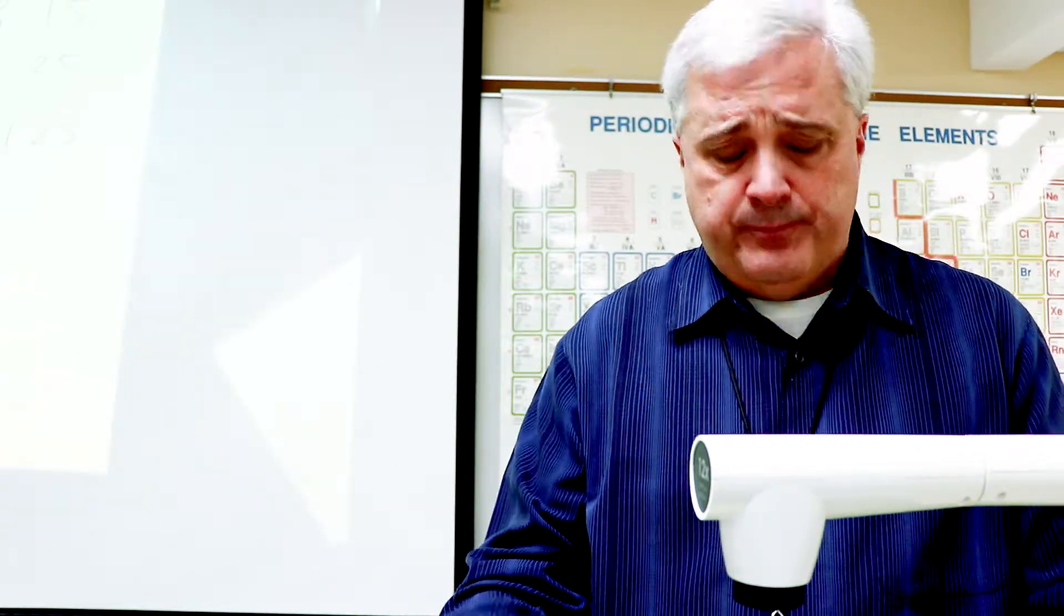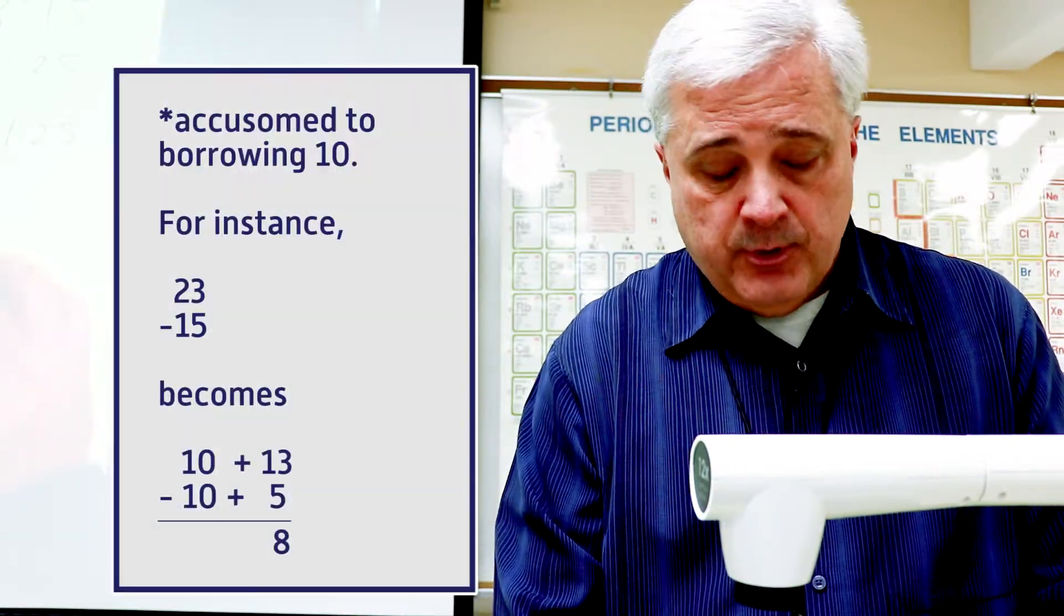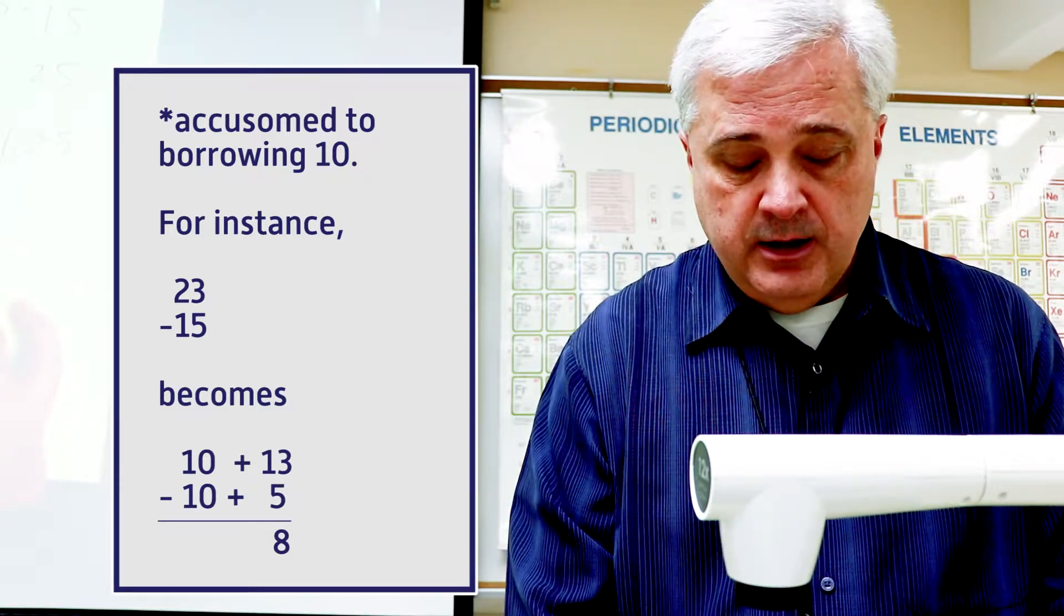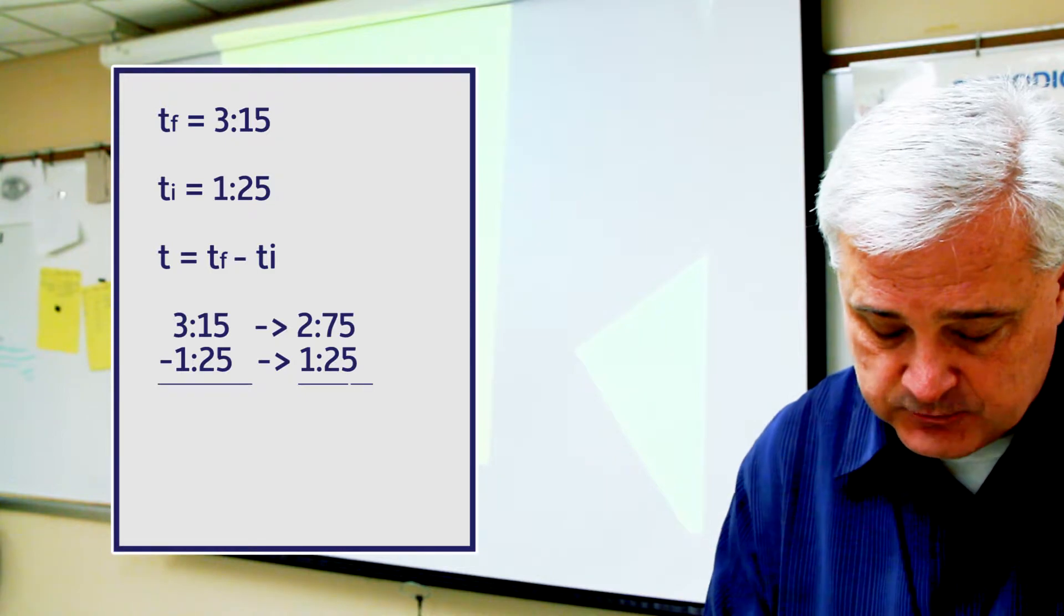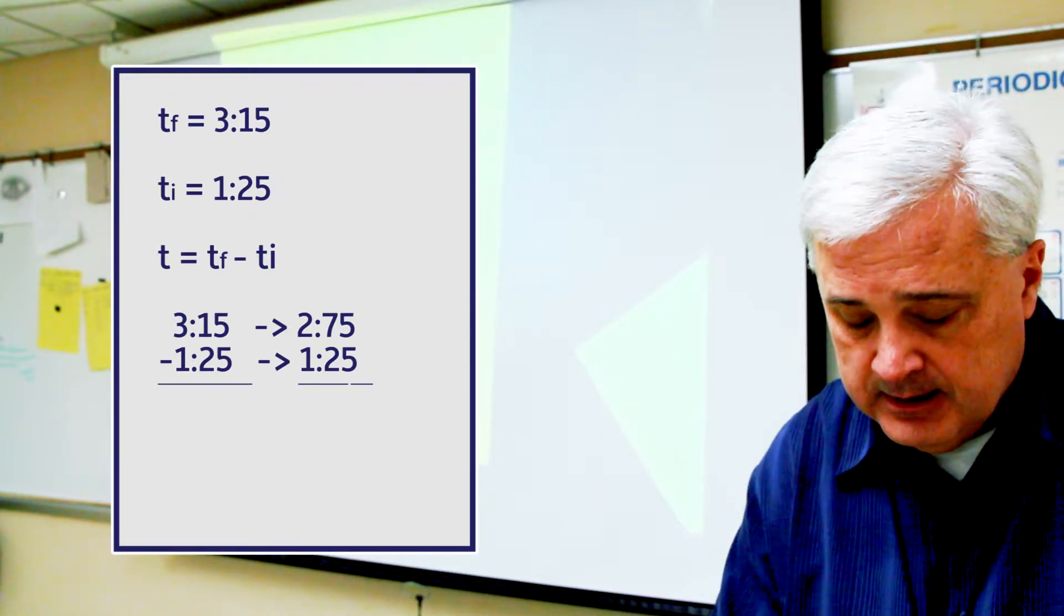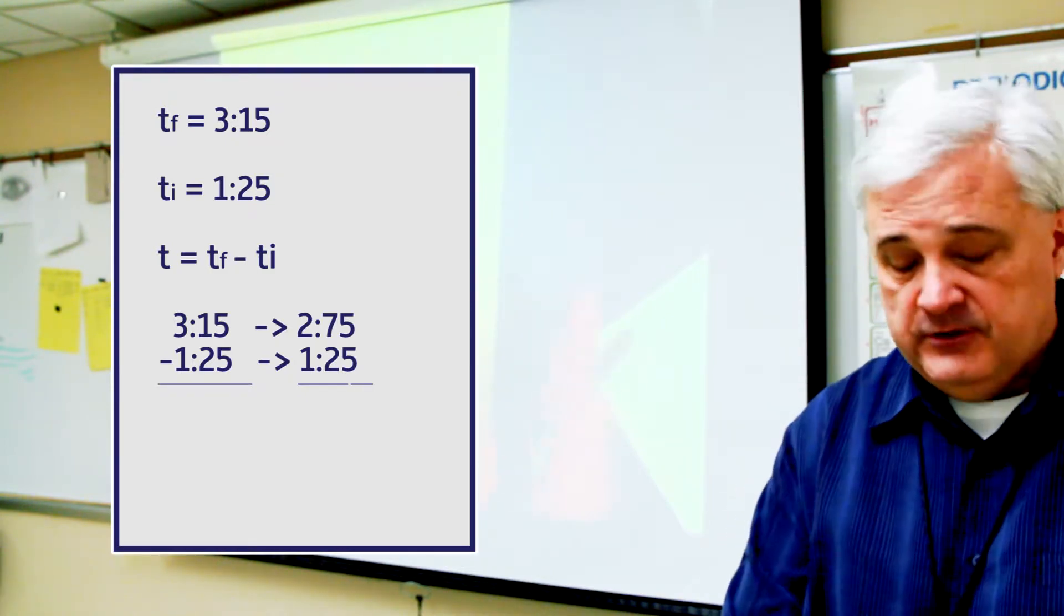You're going to have to borrow. Now we're all accustomed to borrowing 10. But when we borrow on clocks, we're borrowing 60 minutes. So the 3 becomes a 2. And then this becomes, instead of 15, 75. 75 minus 25 is 50. 2 minus 1 is 1. And so our answer is an hour and 50 minutes.